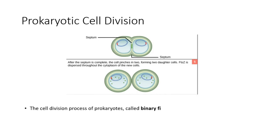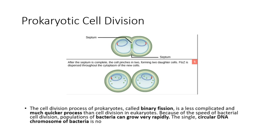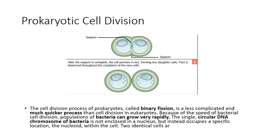The cell division process of prokaryotes, called binary fission, is a less complicated and much quicker process than cell division in eukaryotes. Because of the speed of bacterial cell division, populations of bacteria can grow very rapidly. The single circular DNA chromosome of bacteria is not enclosed in a nucleus, but instead occupies a specific location, the nucleoid, within the cell.